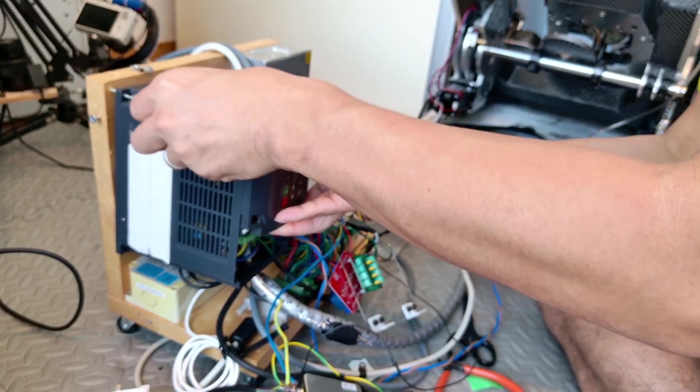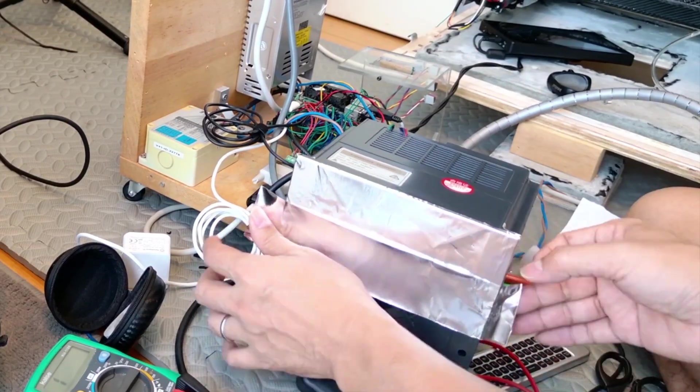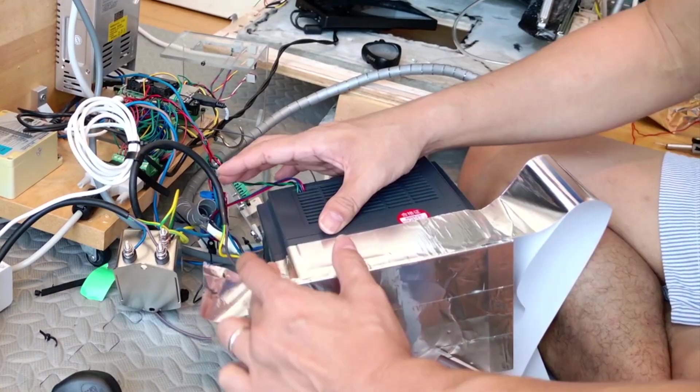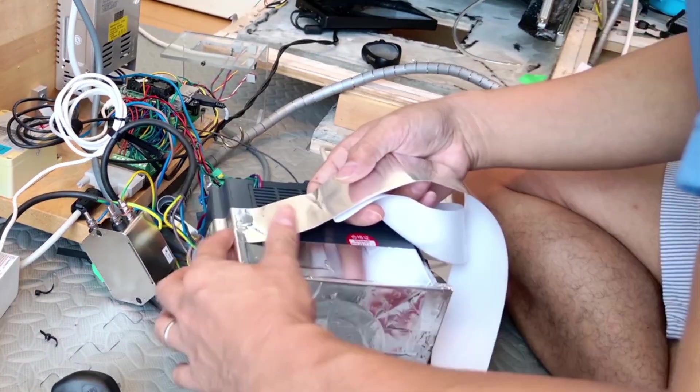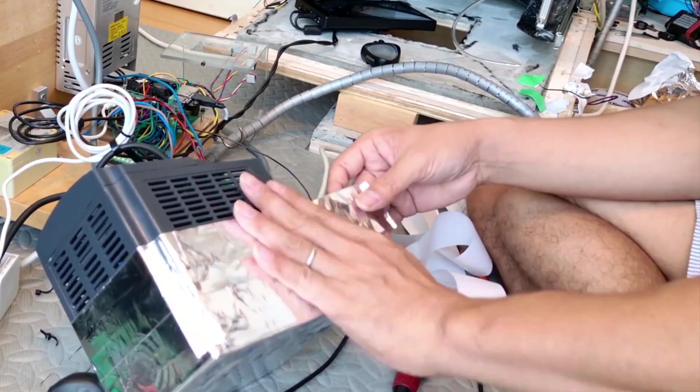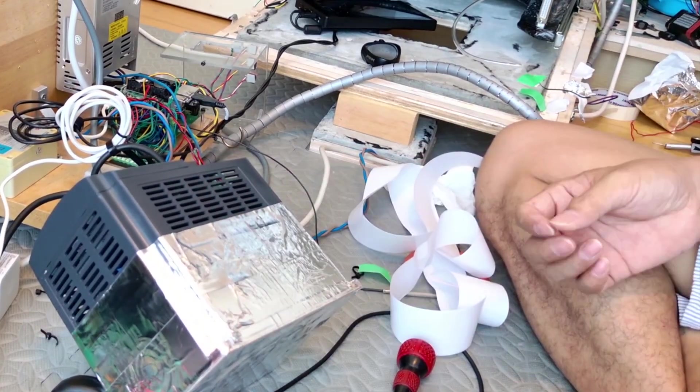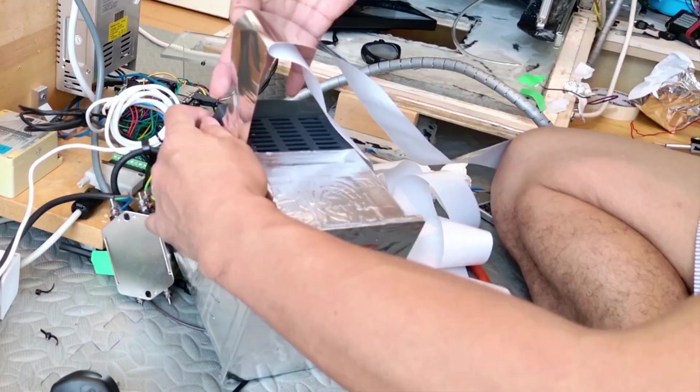By the way, this applause and cheering you hear, totally fake. Freak, just because your views don't go up doesn't mean you can throw in random effects like that. Anyway, this noise problem was brutal. Since I suspected the VFD itself was generating noise, I decided to wrap everything in aluminum tape to try to kill the source of the noise. I'm not 100% sure if it really worked, but of course all of that aluminum tape was connected to the ground of the line filter.